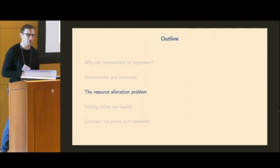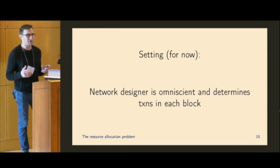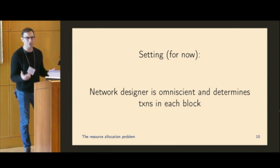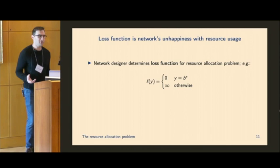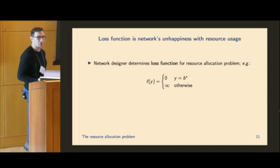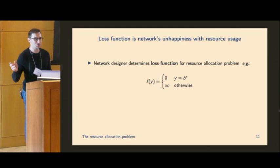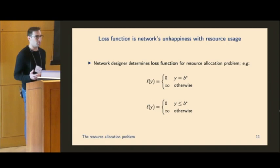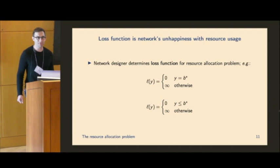And so the next part of this talk is we're going to show that all these pricing update rules are actually implicitly solving an optimization problem. And so if we choose a specific objective function as the network designer for this optimization problem, that leads us to a specific update rule. So we can say whether something's good or not based on, does this objective function correspond to kind of what we want out of the network? And we call this problem the resource allocation problem, which I'm going to introduce in the setting that the network designer's omniscient determines the transactions in each block. This will be relaxed shortly, but just as a mental model to construct this, this is a helpful place to start out. So we're going to introduce a few components to allow us to construct this problem. The first one is a loss function, and the loss function is simply the network's unhappiness with the resource usage.